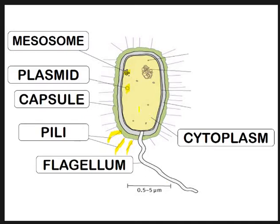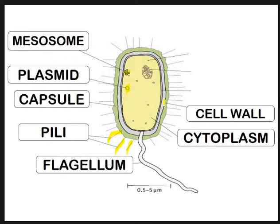Going round, we've got cytoplasm - the jelly-like substance found inside a cell - which is the site of chemical reactions. Then we've got the cell wall, found inside the capsule, which gives structural support. It's made of different substances than a plant cell wall - in a bacterial cell wall it has a protein component, peptidoglycans, whereas in a plant cell wall it's made of cellulose.